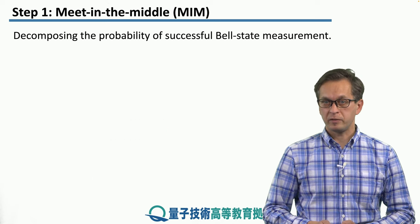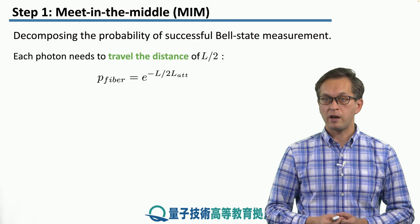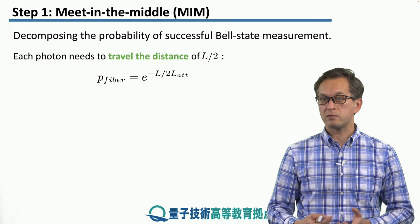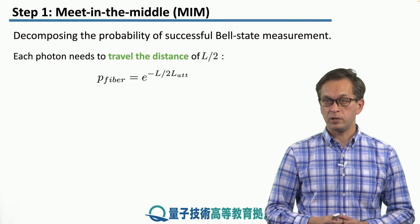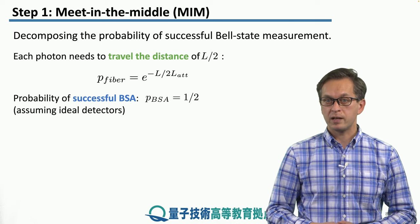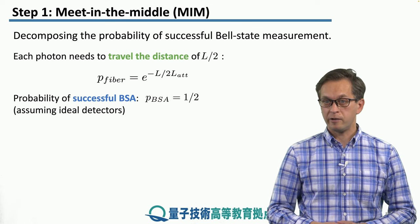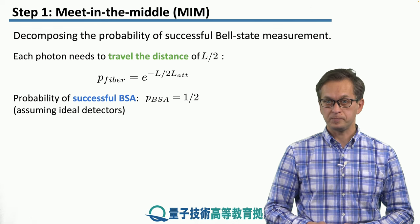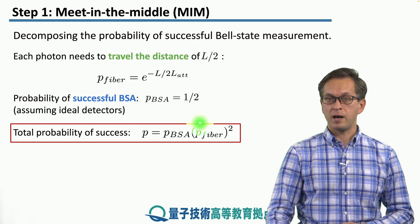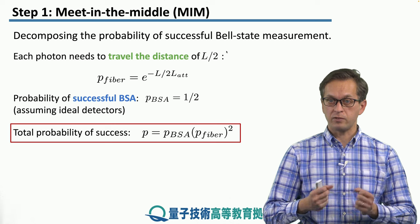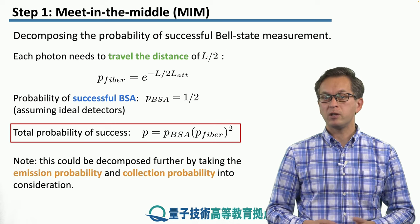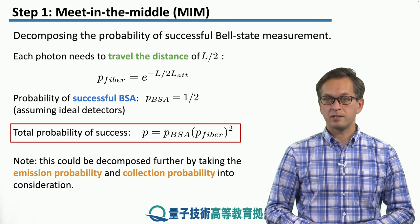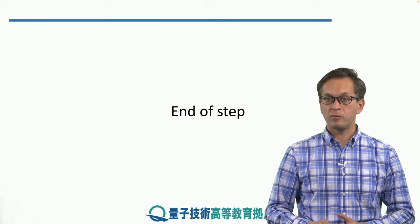We can decompose the probability of a successful Bell state measurement further by considering the probability that each photon arrives from the memory to the BSA. This depends on L over 2, assuming the BSA is directly in the middle between the two repeaters, and on the probability of a successful Bell state measurement at the BSA. In linear optics, this is fundamentally limited to P_BSA equal to one-half, assuming 100% efficient detectors. The total success probability is P_BSA times P_fiber squared, since we require two photons to arrive at the BSA. We can decompose further by considering the probability of successful emission and collection of each photon into the fibre. This concludes our discussion of the MIM architecture; the next step covers the second architecture.